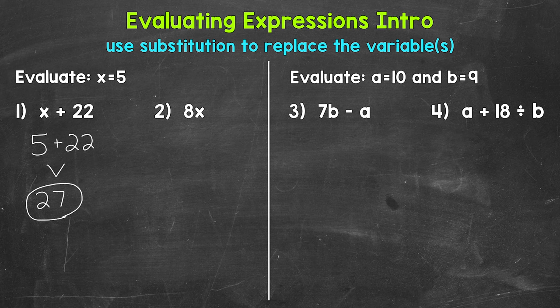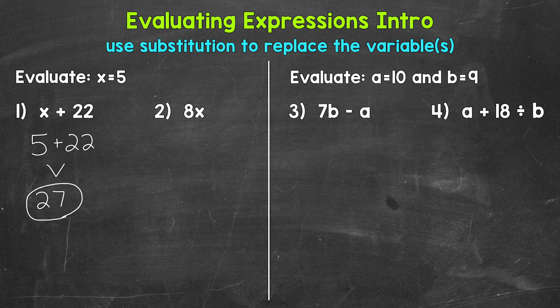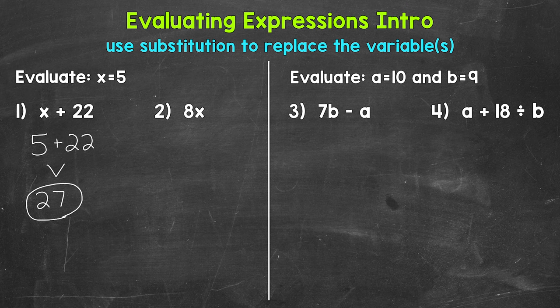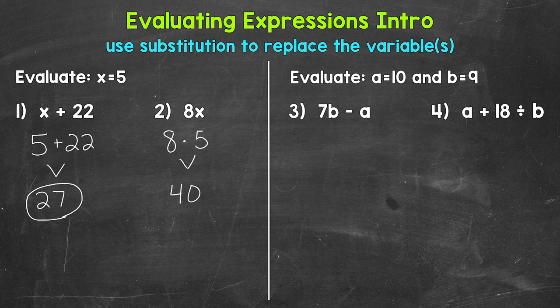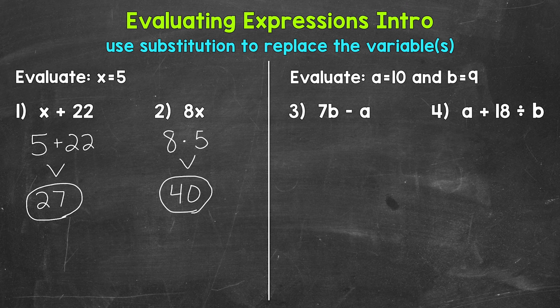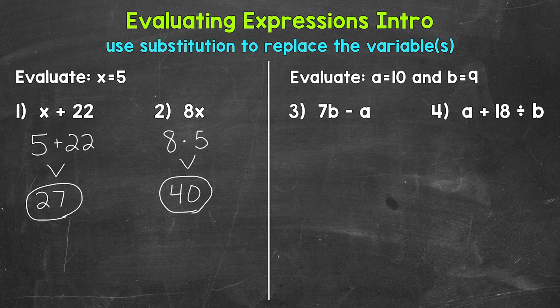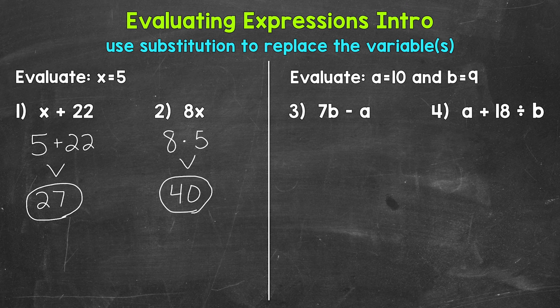Let's move on to number two, where we have 8x. A number next to a variable means we are multiplying, so this is 8 times x. Let's plug in and evaluate: 8 times 5 equals 40. So the value is 40 when x equals 5. One thing to mention: when we plug 5 in for x, make sure to use something to represent multiplication. I used a dot. We can't put those two numbers together, the 8 and the 5, to represent multiplication—that would look like 85. We can only put a number next to a variable to represent multiplication.